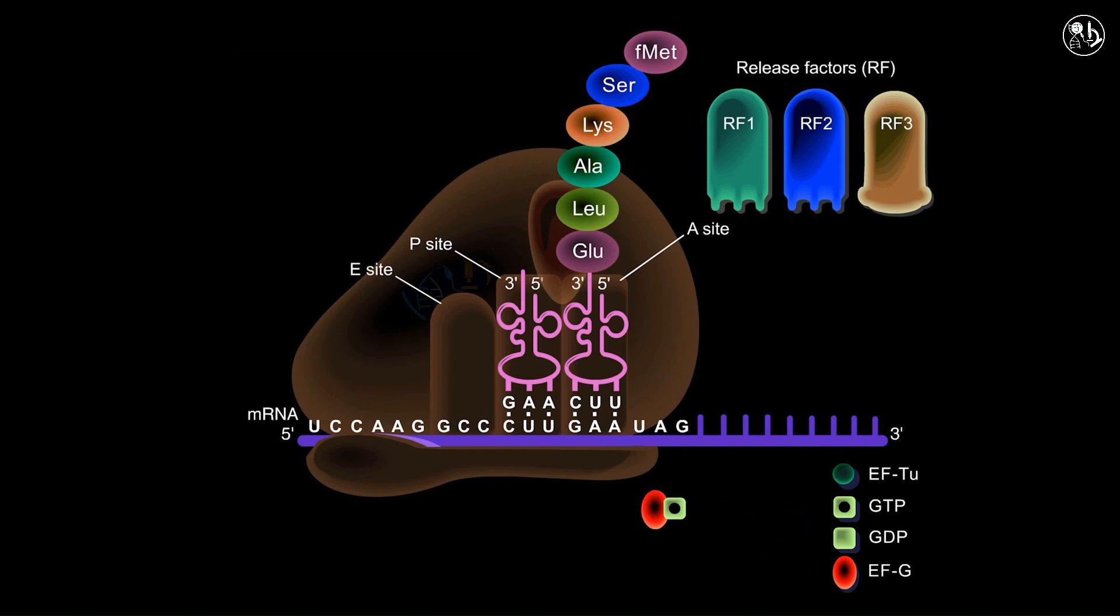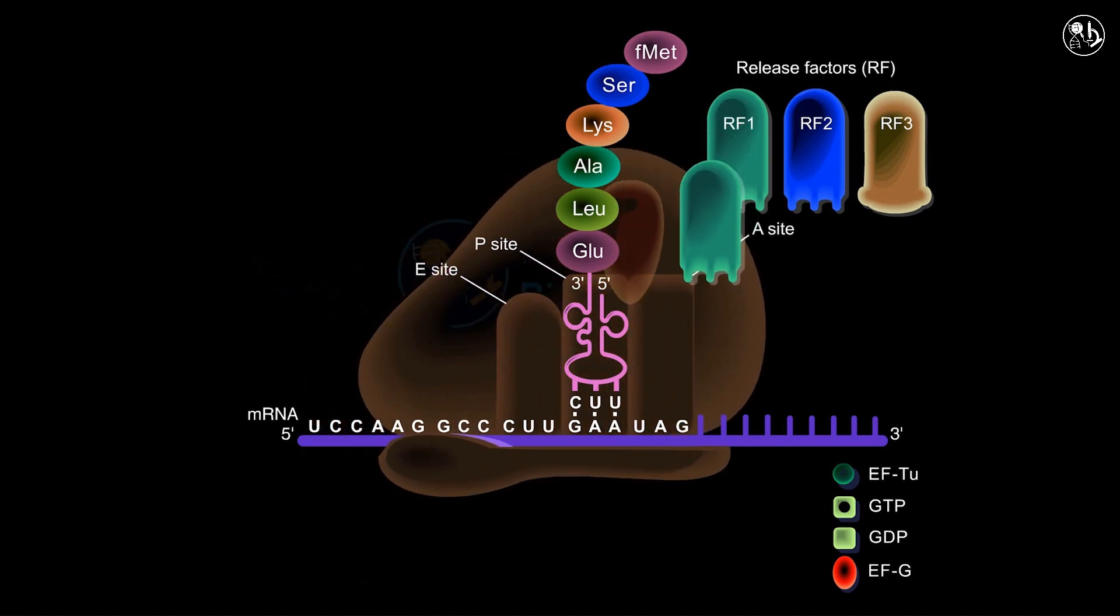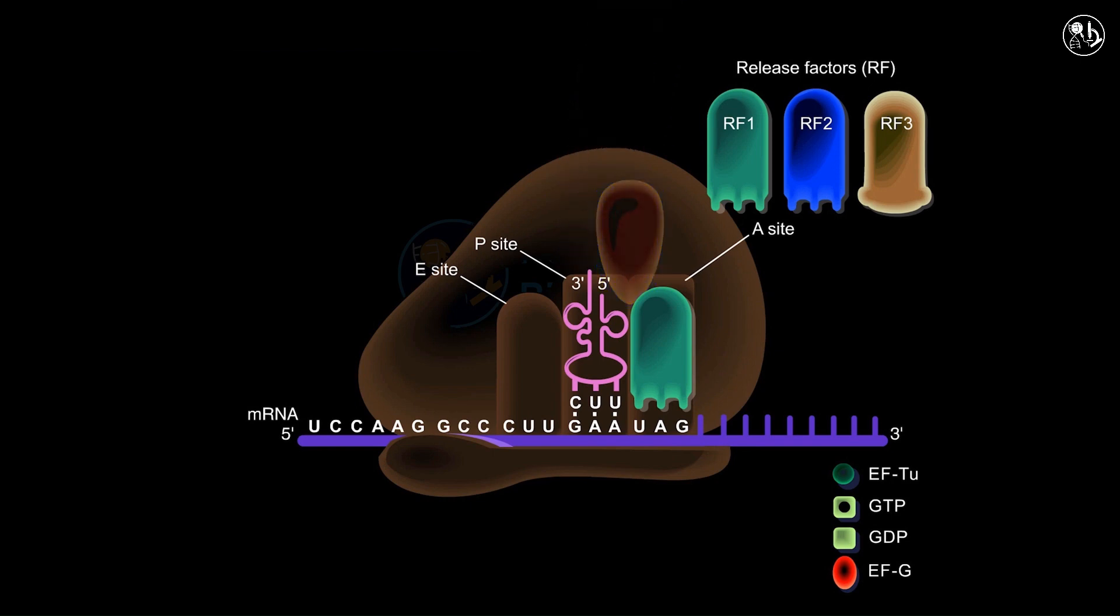A stop codon is introduced into the A site as a result of elongation and ribosome translocation. The binding of RF1 or RF2 to the stop codon prompts peptidyl transferase to detach the fully formed polypeptide from its tRNA in the P site of the ribosome.